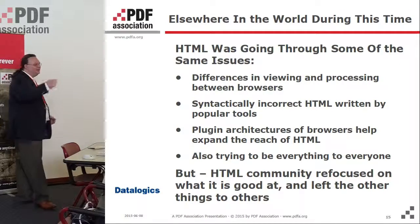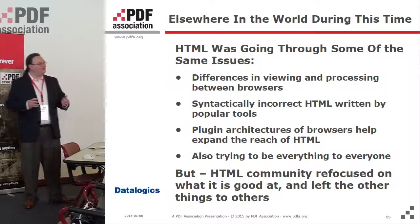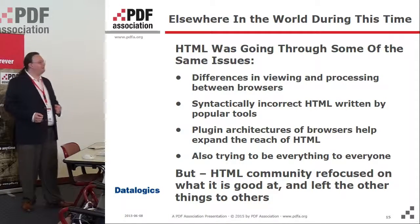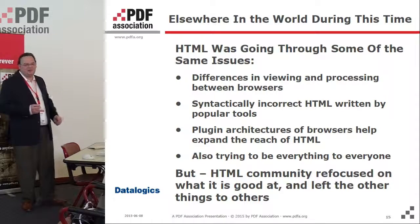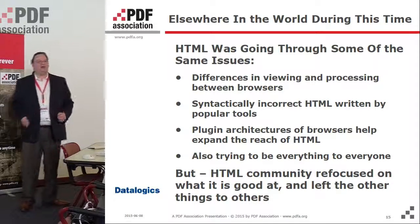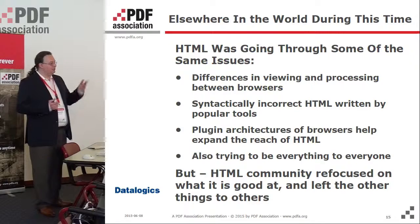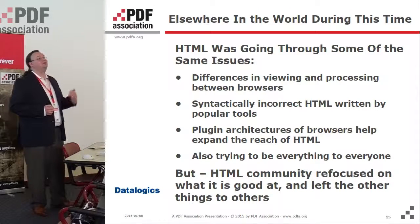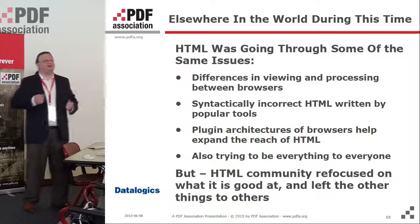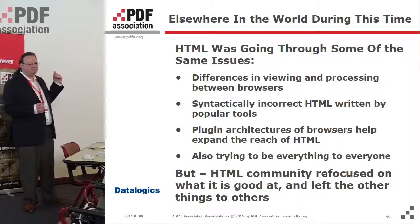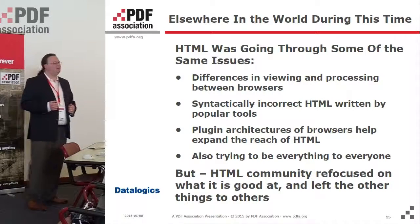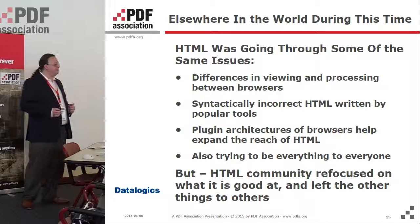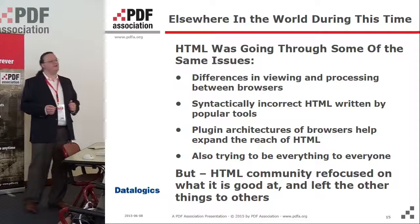I want to go off on a tangent and talk about something else going on in the world at this time. I want to talk about HTML, which went through many of these same problems. It came out about the same time as PDF and has been with us for just about the same length of time. It went through many of the same growing pains — differences in how viewers interpret it, syntactically bad files being written, plugin architectures helping to grow the ecosystem but leading to reliability problems — and HTML also trying to be everything to everyone. What happened? The HTML community sat down and refocused its efforts on being good at what it's good at and letting other things be good at what they're good at. It decided it can't be everything to everybody.